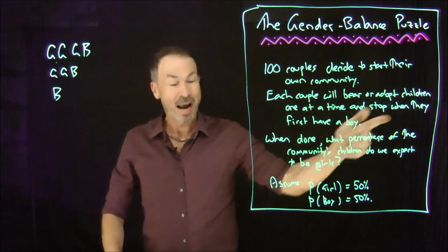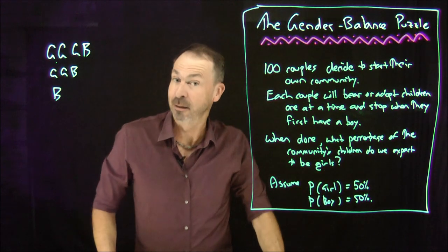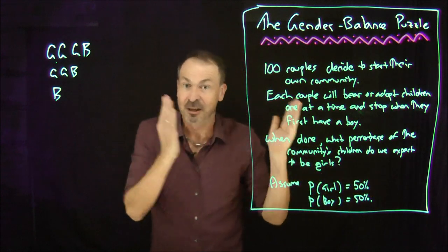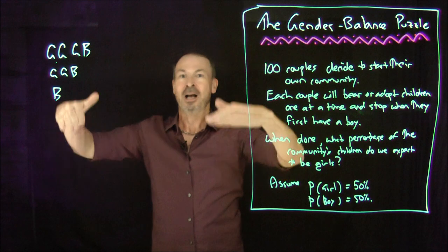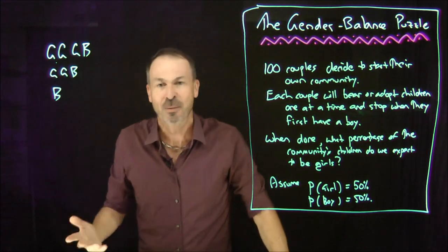And the final question is, when done, what percentage of the community's children do we expect to be girls? So assume we're like having a boy or girls like flipping coins, a 50% chance, 50% chance of each. We'll just go with that assumption. So if 100 couples were to do this process, on average, how many girls, what percentage of girls do we expect to be amongst the children's, the community's children?